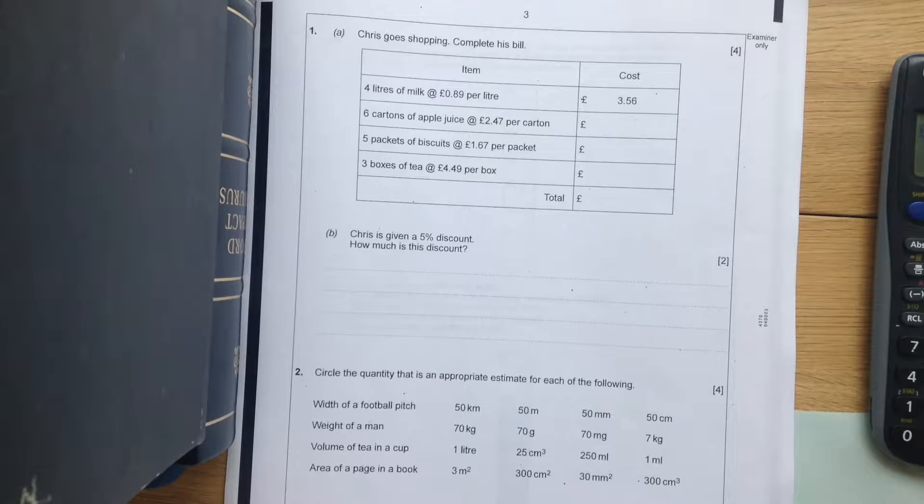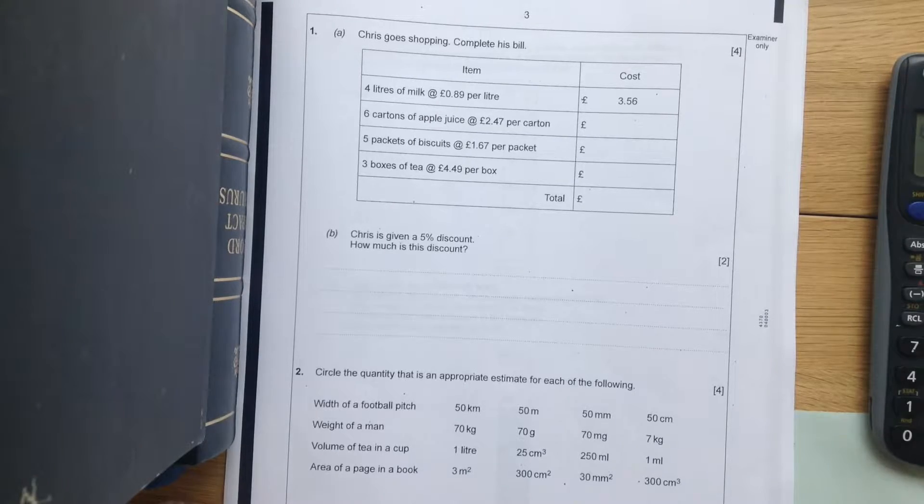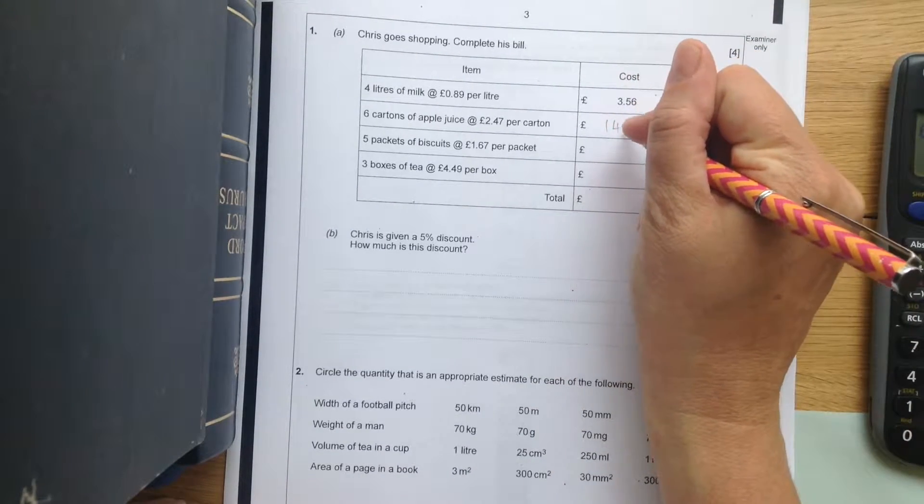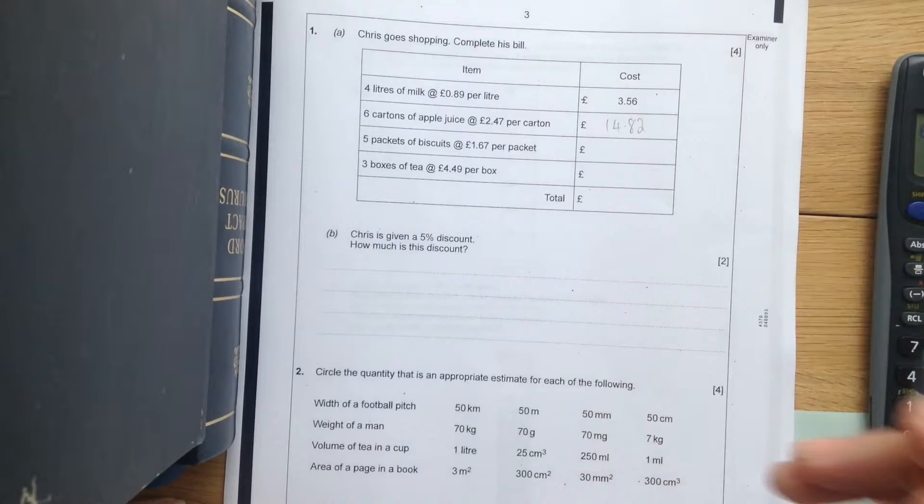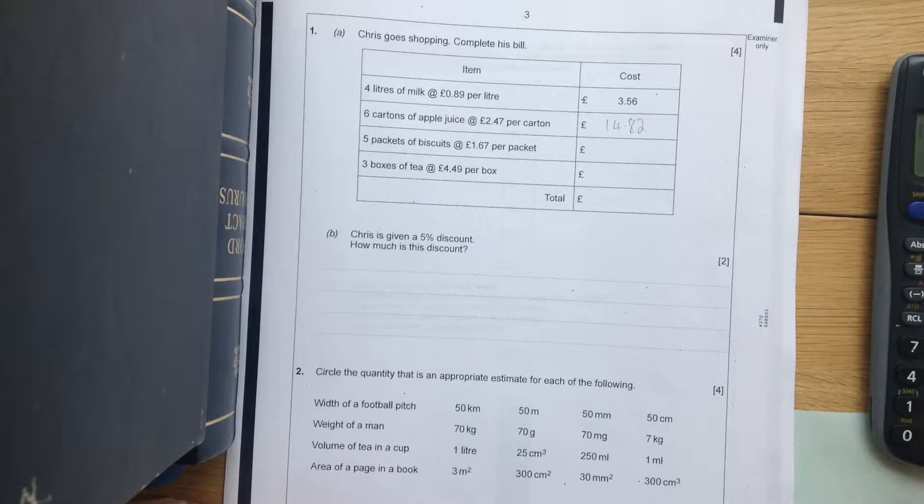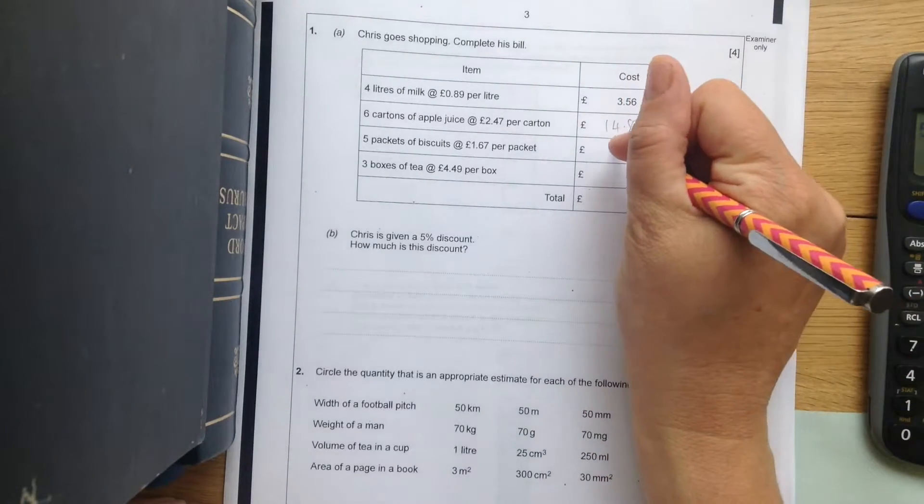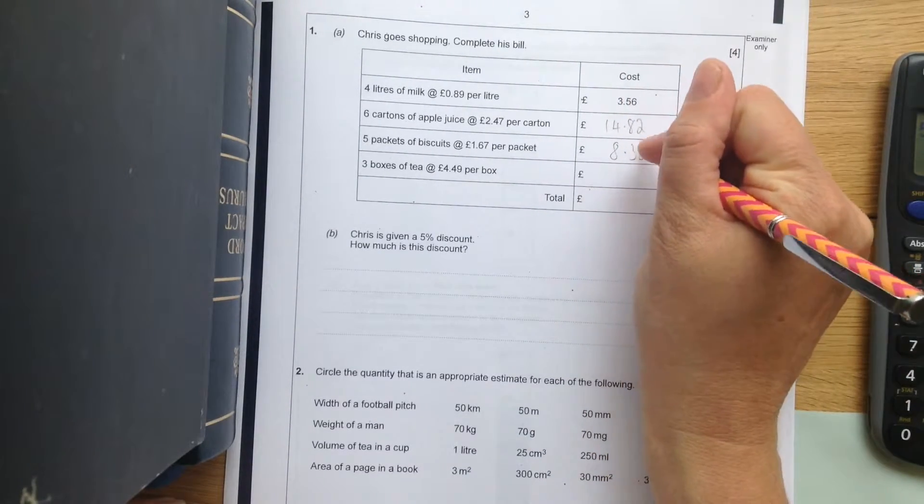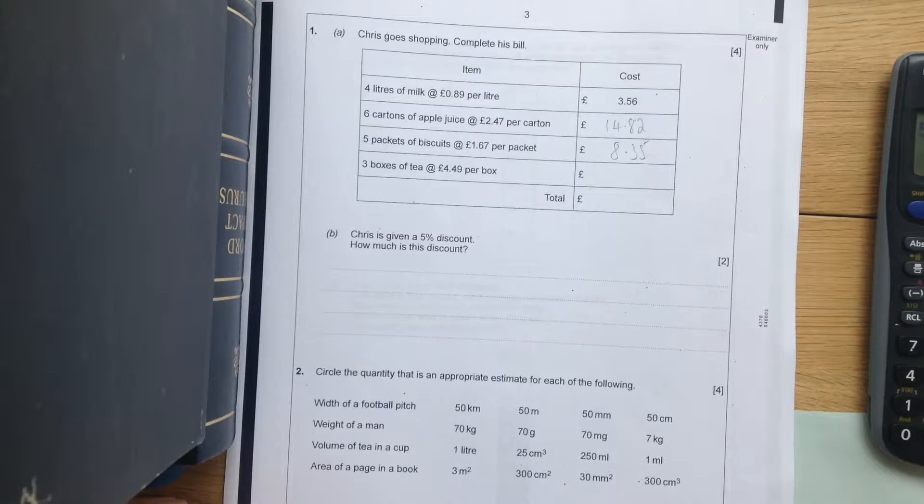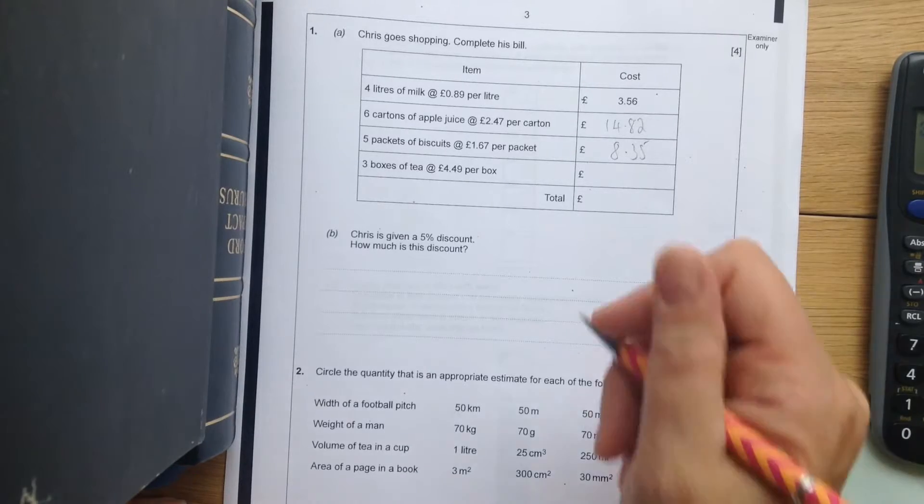Then six cartons at two pounds forty-seven, so I need to do six times two point four seven, and the answer is fourteen point eight two. Next one is five times one pound sixty-seven and I get eight point three five. And finally we've got three times four point four nine and for that one we get thirteen point four seven.